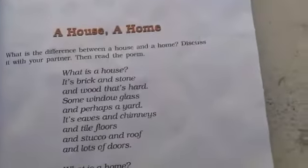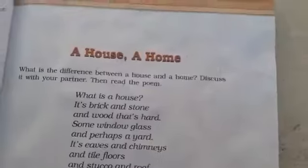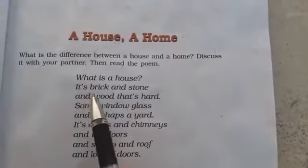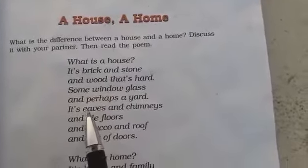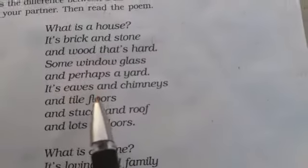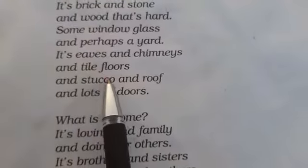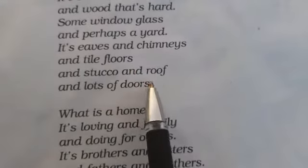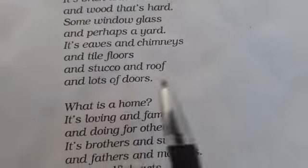What is a house? It's brick and stone and wood that's hard, some window glasses and perhaps a yard. It's eaves and chimneys and tile floors and stucco and roofs, a lot of doors.